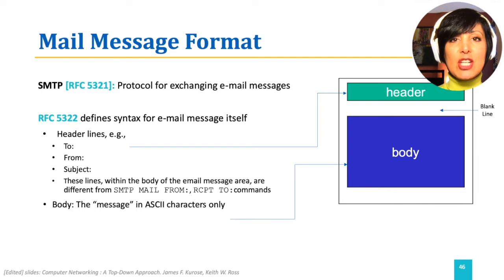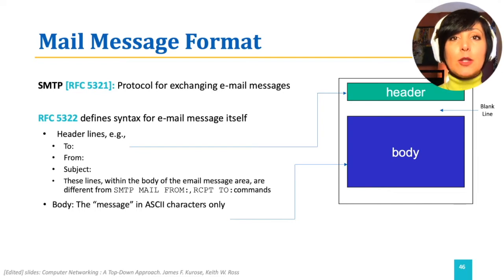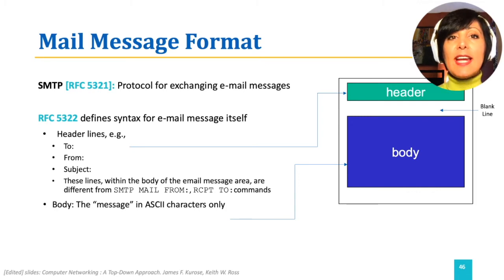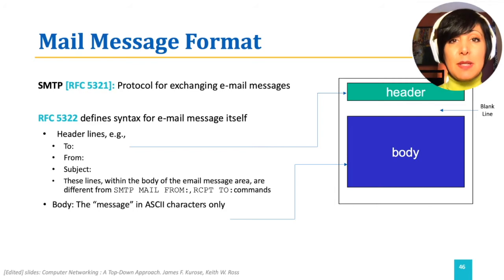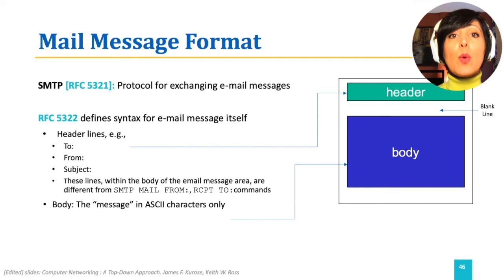Mail messages have header lines followed by a blank line and then the message body. The message header includes, for example, 'to', 'from', and 'subject'. Note that these are different from SMTP commands like 'mail from' or 'receipt to' — these header fields are within the message itself.